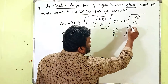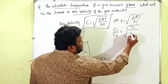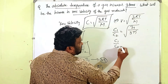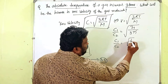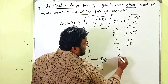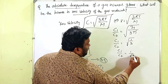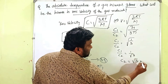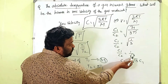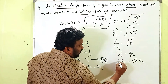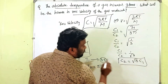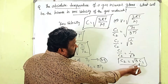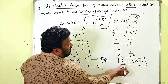Substituting into the ratio: c1/c2 = √(T1 / 3T1). The T1 cancels, giving c1/c2 = √(1/3) = 1/√3. By cross multiplication: c2 = √3 · c1. Here c1 is the initial RMS velocity and c2 is the final RMS velocity after the temperature is increased three times.